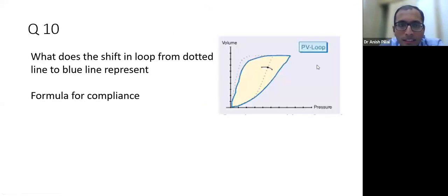This is the last question, again a simple question. What is happening if this loop shifts from dotted line to the blue line? What is happening?